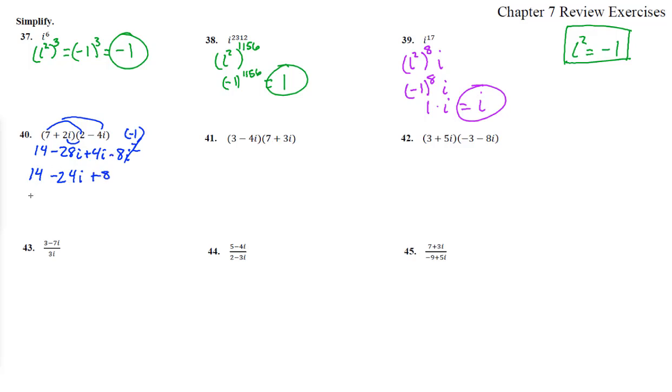So this is plus 8. So the 8 and the 14 go together, and you have 22 minus 24i. We write imaginary numbers with their real part first and then their imaginary part second.